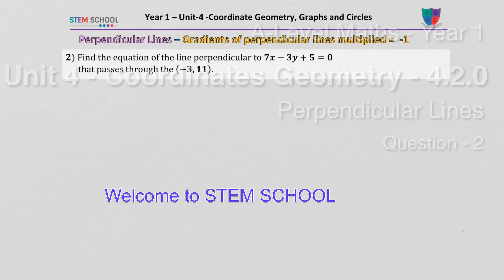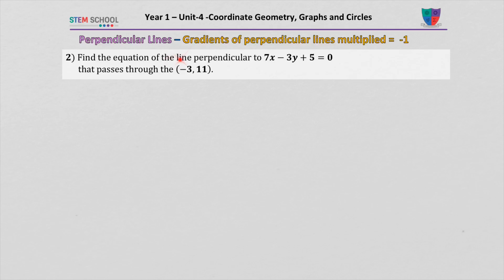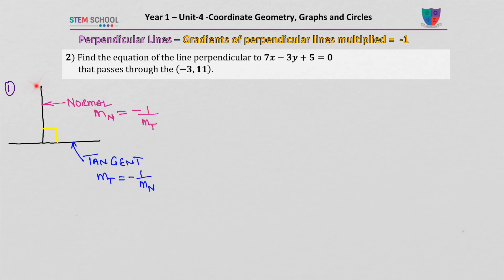Question two: perpendicular lines. Find the equation of the line perpendicular to the tangent 7x minus 3y plus 5 equal to 0, and which passes through the point minus 3 and 11.